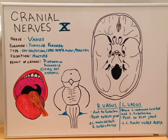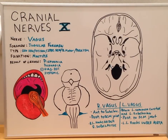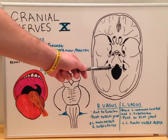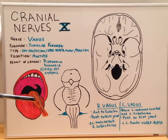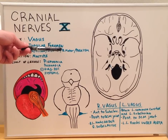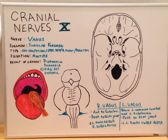Today's lecture will continue our series on the cranial nerves with cranial nerve number 10, the vagus nerve. The vagus nerve begins in the medulla oblongata and continues its course laterally through the jugular foramen where it branches out from there. It has a multitude of different types of fibers including general sensory, visceral sensory, special sensory, branchial motor, and parasympathetic fibers.